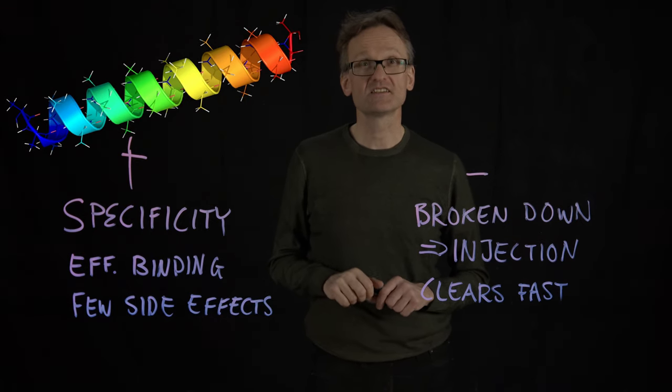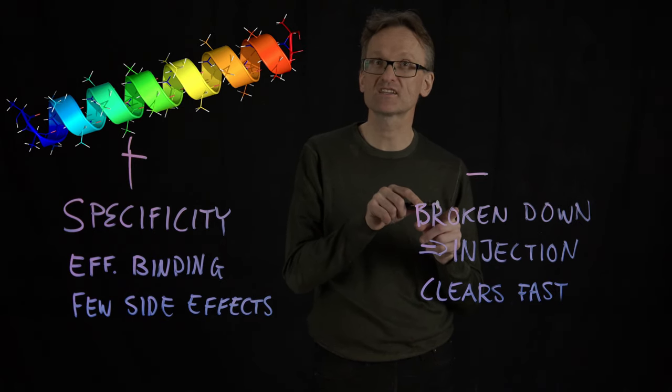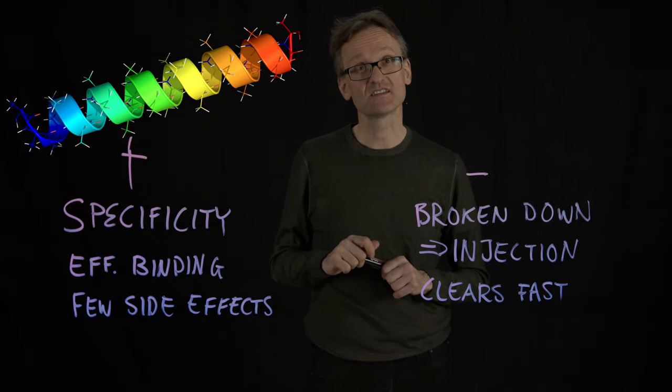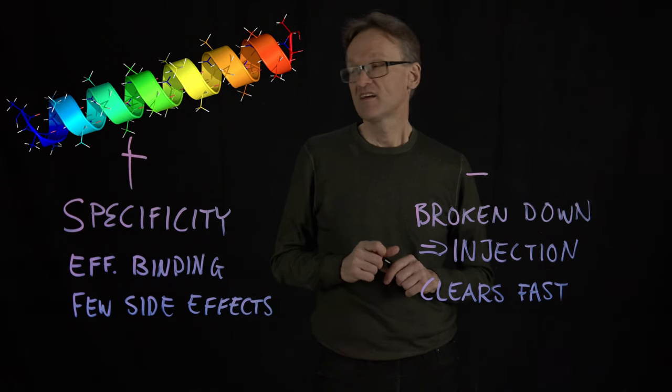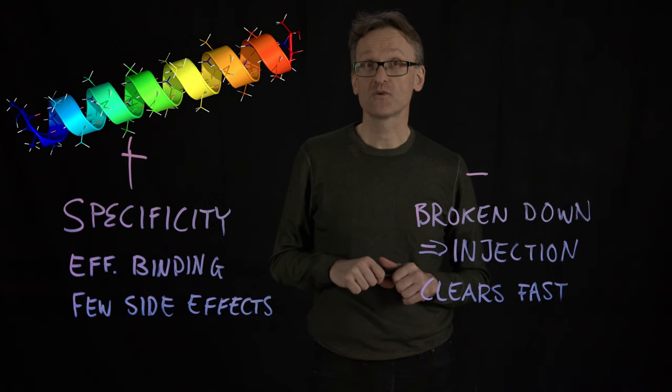Since all our amino acids, including the proteases that are responsible for breaking things down, are L amino acids, designing things with D amino acids might help us do something that is bio-orthogonal. And then it's not going to be broken down as quickly and maybe not clear as quickly. That would be awesome.